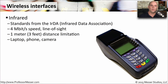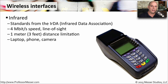A wireless standard that's been around for a long time is one that uses infrared. It's a standard from the Infrared Data Association, or IrDA. This provided four megabits per second of speed, but it needed to be line of sight because it's using an infrared connection that's not able to go around corners. We're able to get about three feet, or a meter's worth, of distance between the two devices.